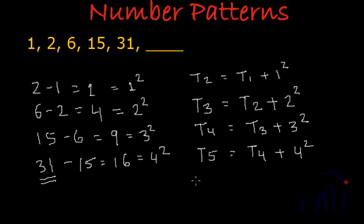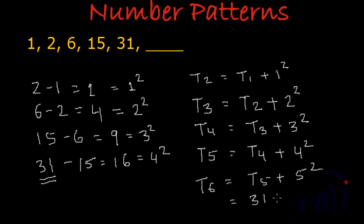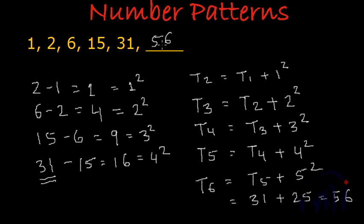So what will be t6? t6 will be the fifth term plus the square of 5. That is 31 plus 25 — 5 plus 1 is 6, and 3 plus 2 is 5, giving us 56. So our sixth term will be 56.